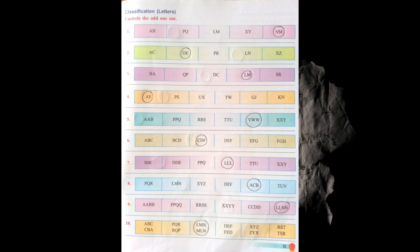Here you have to encircle the odd one out. First: AB, PQ, LM, XY and NM. NM is the odd one because it is in reverse form — all the others are in normal sequential form. Like A then B, P then Q, L then M, X then Y — but in NM, M comes after N, which is reverse.